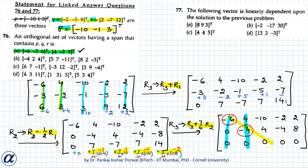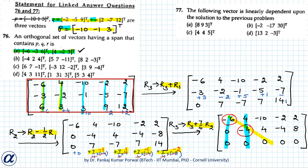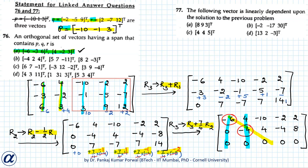The vectors corresponding to the pivot columns — which are the two basis vectors from option A — are the linearly independent vectors among all five. Vectors p, q, and r can therefore be written as linear combinations of these two basis vectors, confirming option A spans the vector space.